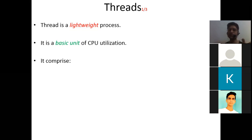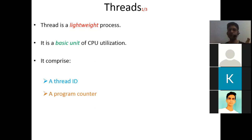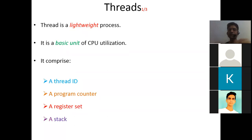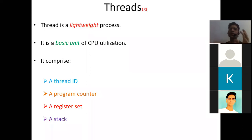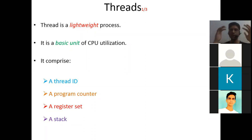A thread comprises — just like your PCB, process control block, has some components — similarly threads have components: a thread ID, a program counter, a register set, and a stack for memory storage. So a thread consists of a thread ID, program counter, register set, and a stack.